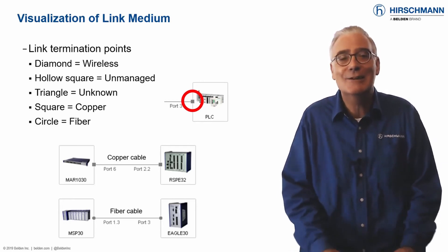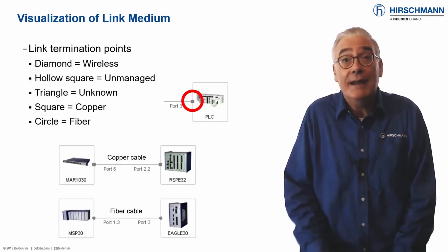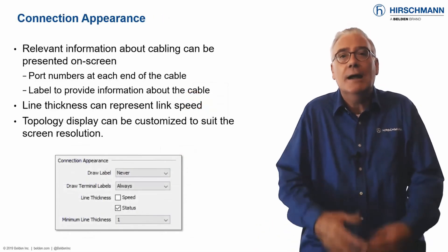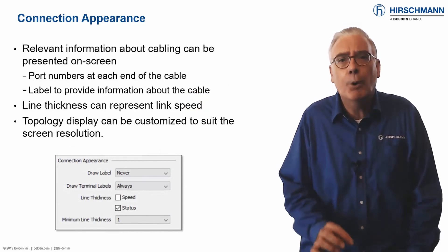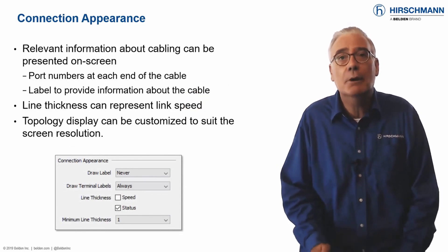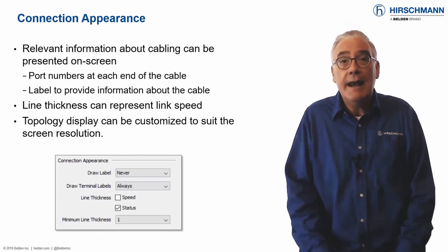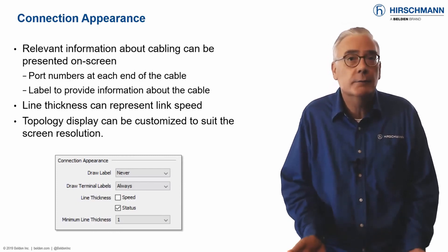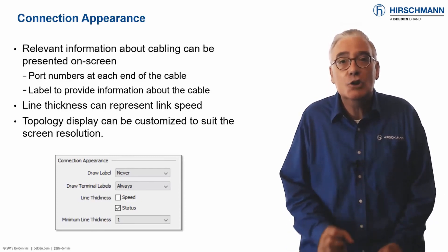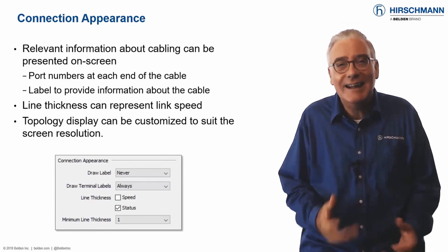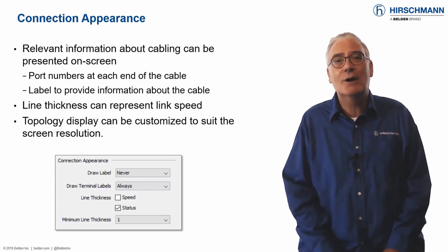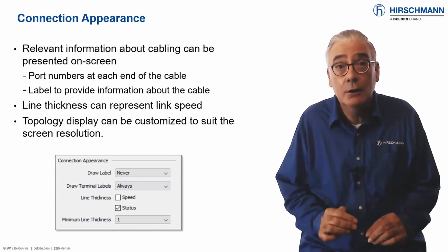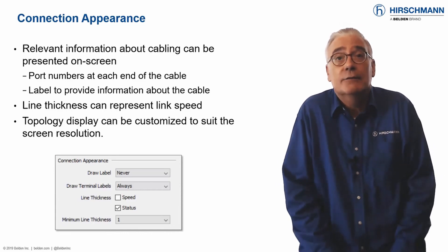Great for network documentation, and in the event of a cable failure you already have a head start with the replacement. On any topology map, port information can tell you where a cable is connected on a device. Labels can indicate where cables are located, for example using patch panel information. While this information is valuable, it can also clutter up the screen display for some topologies. With Industrial HiVision, you can choose to display this information permanently, or just when the mouse pointer is over the connection.